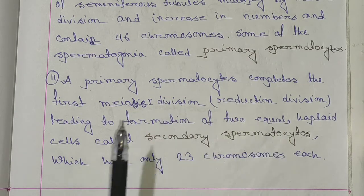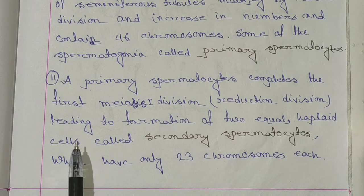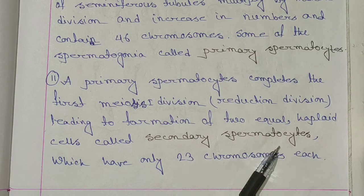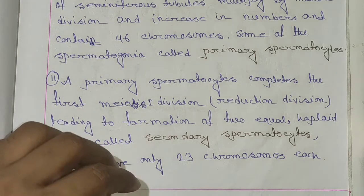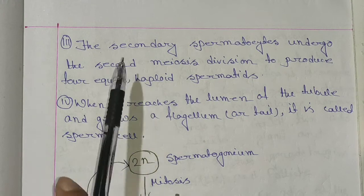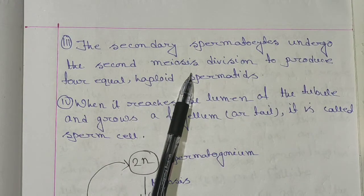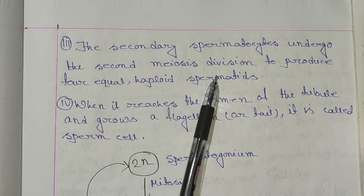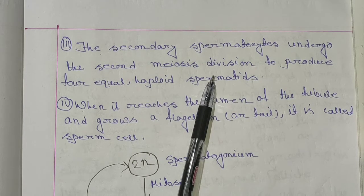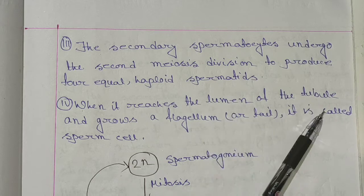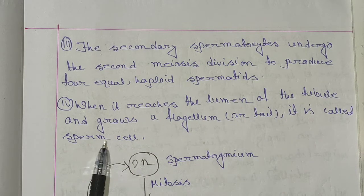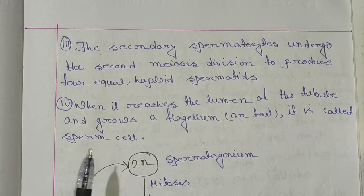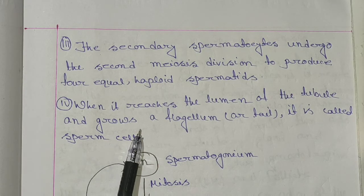These primary spermatocytes divide by one cell division to produce two equal haploid cells which are secondary spermatocytes with 23 chromosomes. Now the secondary spermatocytes undergo the second meiosis (meiosis 2) division to produce four equal haploid spermatids. When they reach the lumen of the tubules and grow a flagellum or tail, they are called sperm cells — these are the four mature haploid spermatids.